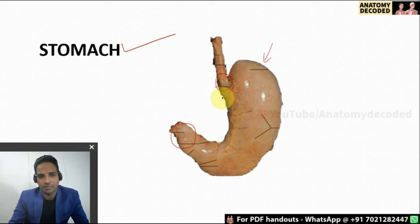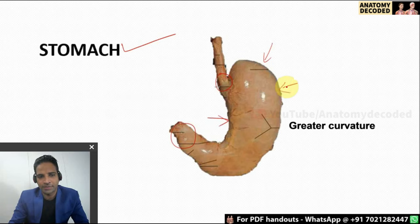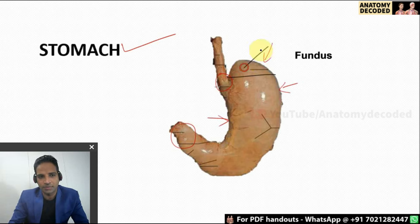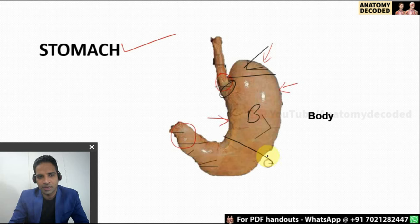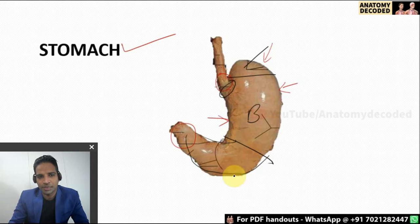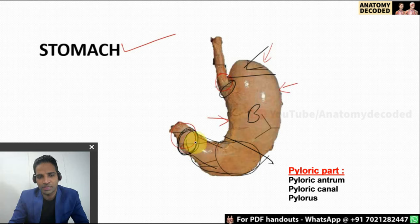Then the other parts: here we can see the lesser curvature and the greater curvature of the stomach. Dividing the stomach into parts — this is the fundus, there is a small cardiac part, this is the body of the stomach, and this entire region is the pyloric part. The pyloric part has further subdivisions: there is the pyloric antrum, then the pyloric canal, and there is a thick muscular fleshy part referred to as the pylorus.